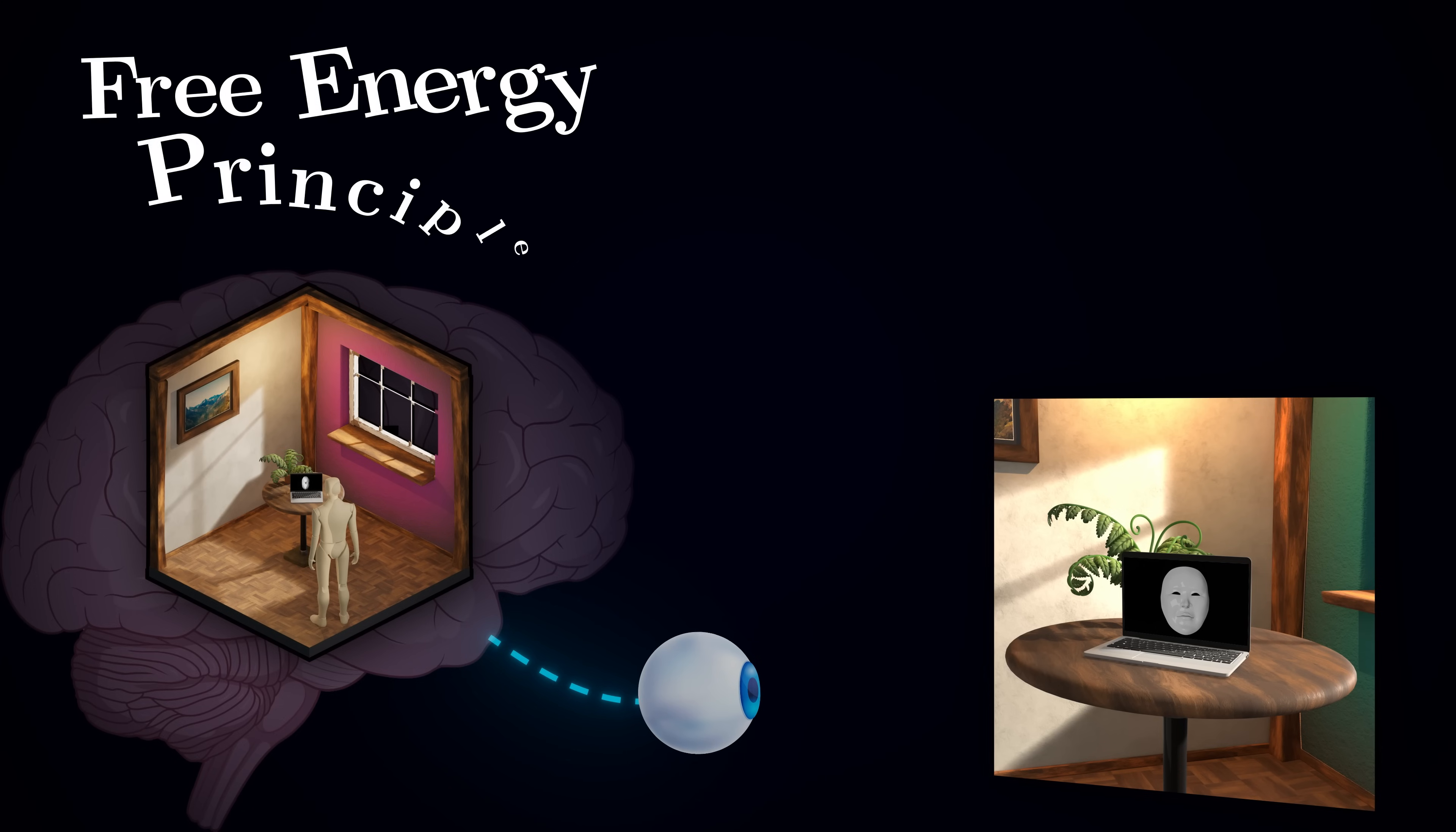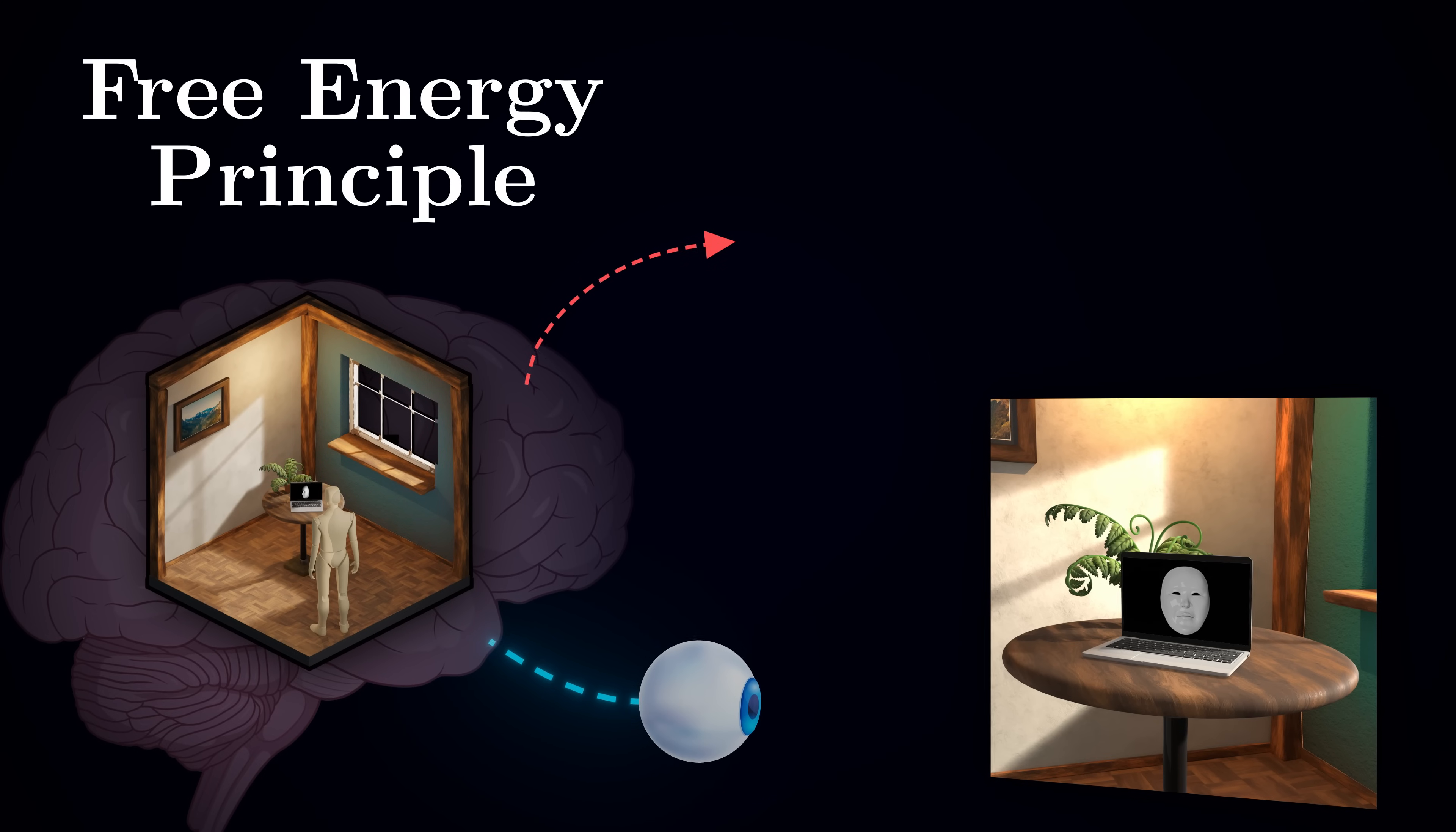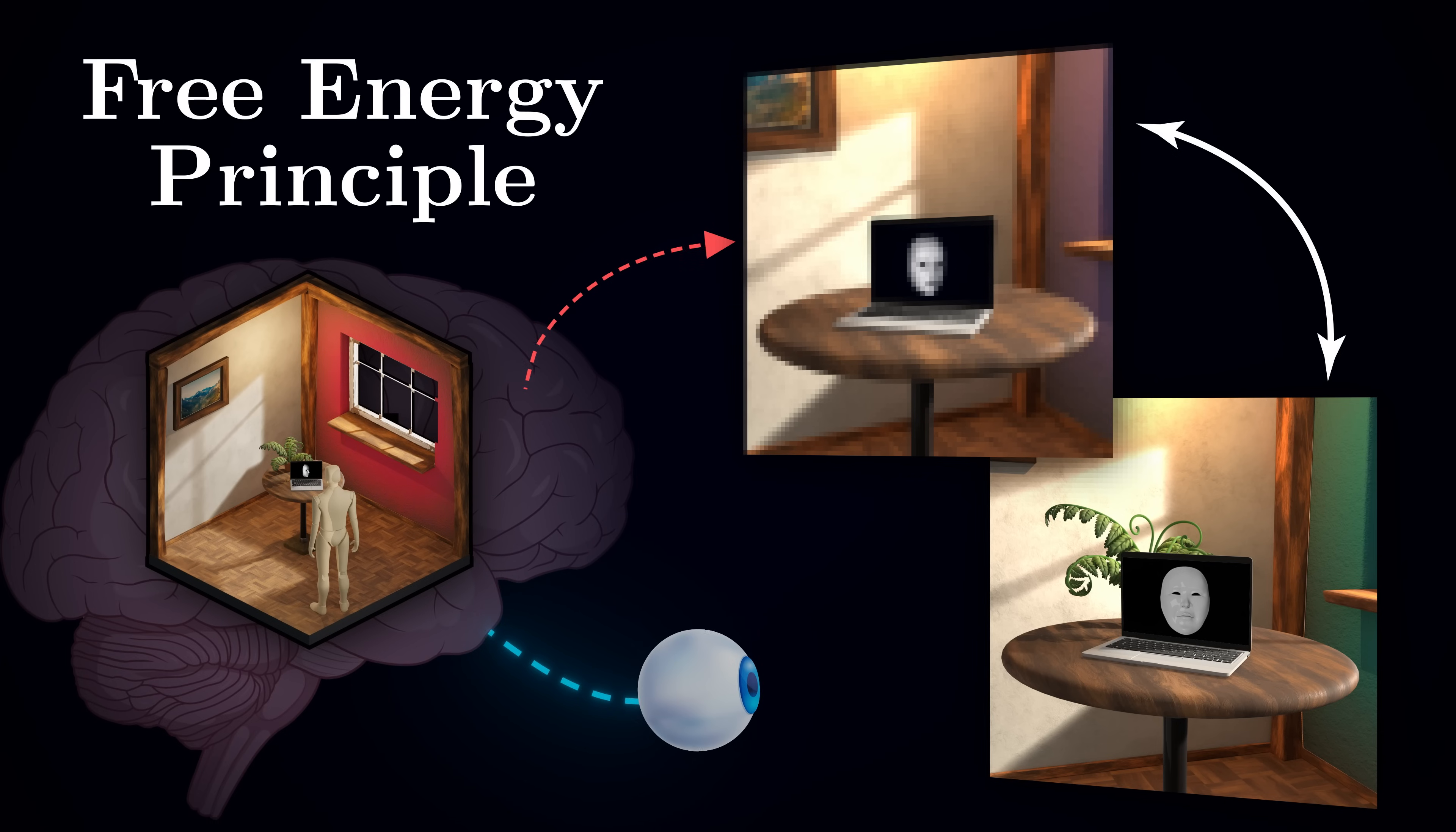There is a powerful theory in neuroscience called the free energy principle, which proposes something mind-bending. According to this framework, your brain isn't passively receiving information about the world. It is actively generating predictions about what should be out there, and then uses the sensory input to merely check if those predictions are right.